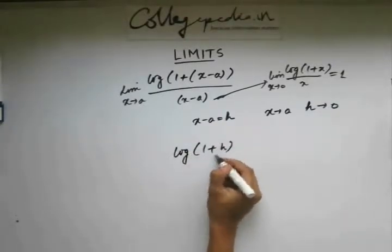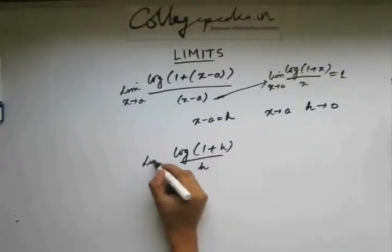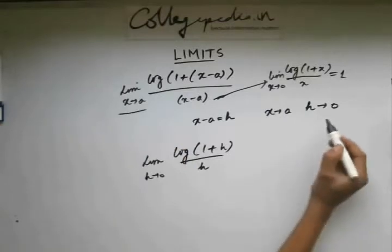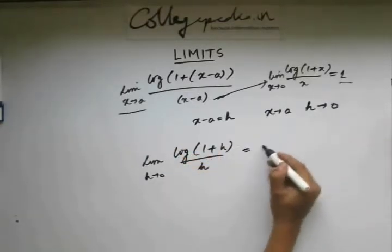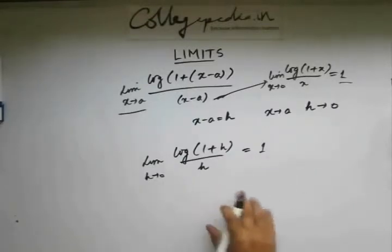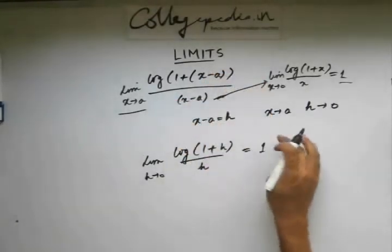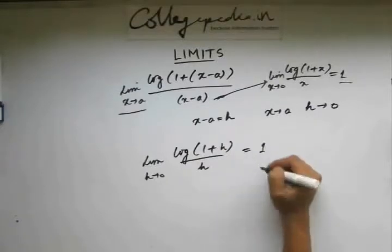So let's modify this: log 1 plus h by h. Now the new limit is limit h approaches 0, since as x approaches a, h approaches 0. So this is the new limit. Now as you can see this is the standard result, so this value evaluates to 1. So the limiting value of this function as x approaches a is 1.